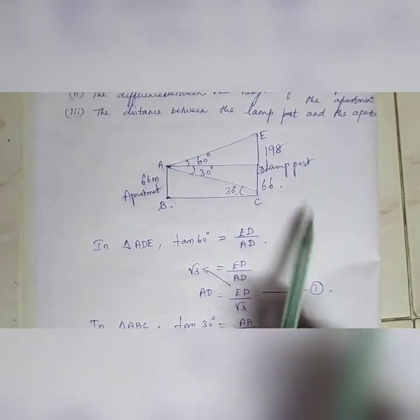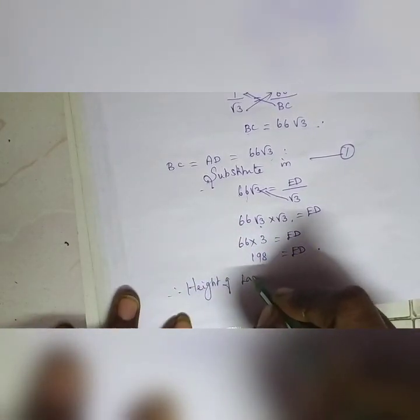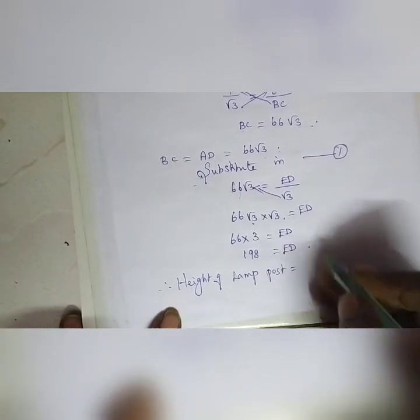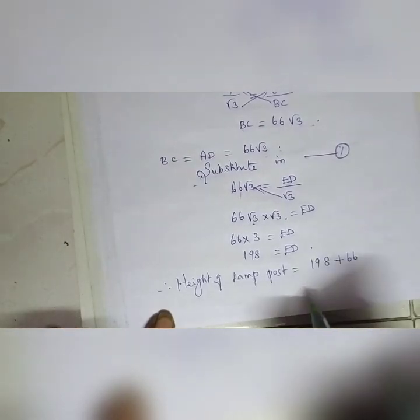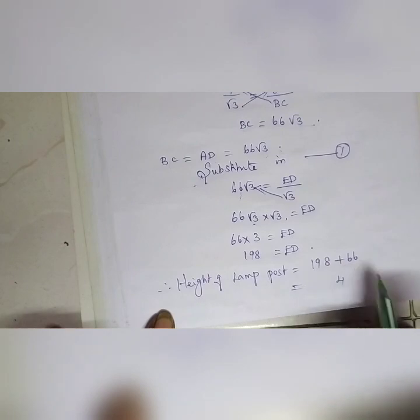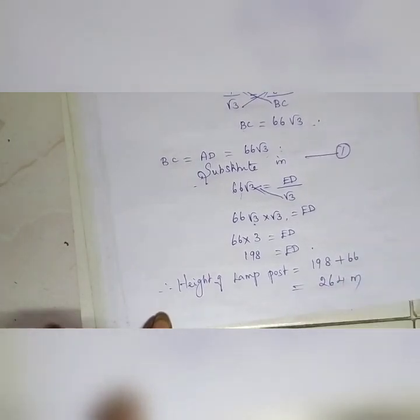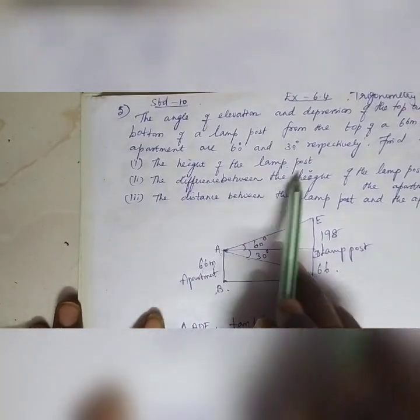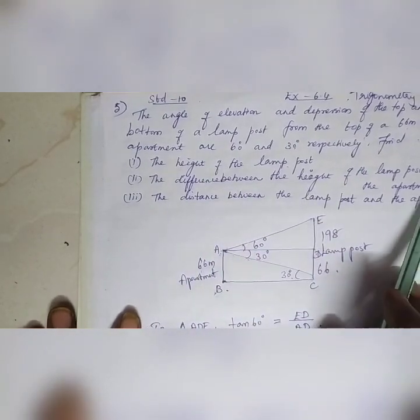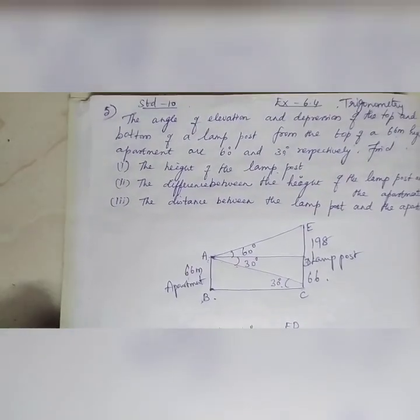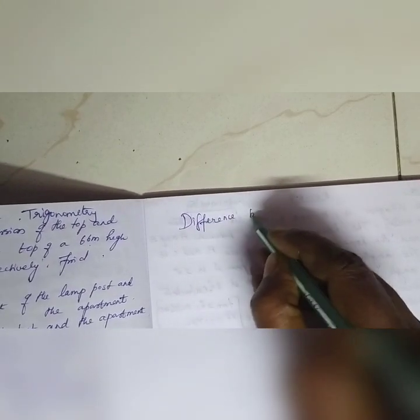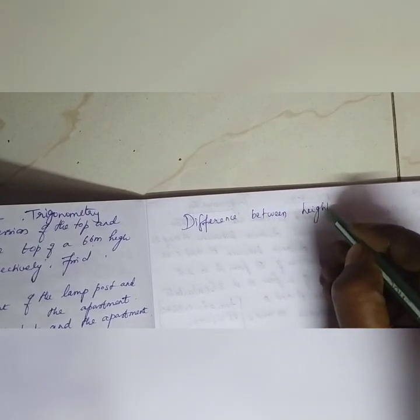Therefore, the height of the lamp post is equal to 198 plus 66, which gives us 264 meters. That is the answer to the first question — height of the lamp post is 264 meters. Next is the difference between the height of the lamp post and the apartment.